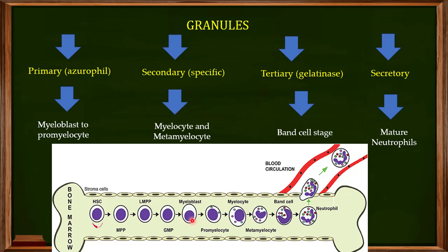This is the figure I discussed in the last video. As you can see, granule production starts at the promyelocyte stage — those are the primary granules. The secondary granules appear as neutrophils move from myelocyte to metamyelocyte. The tertiary granules appear in band cells, and the secretory granules are present in mature neutrophils, which are then released into blood circulation.